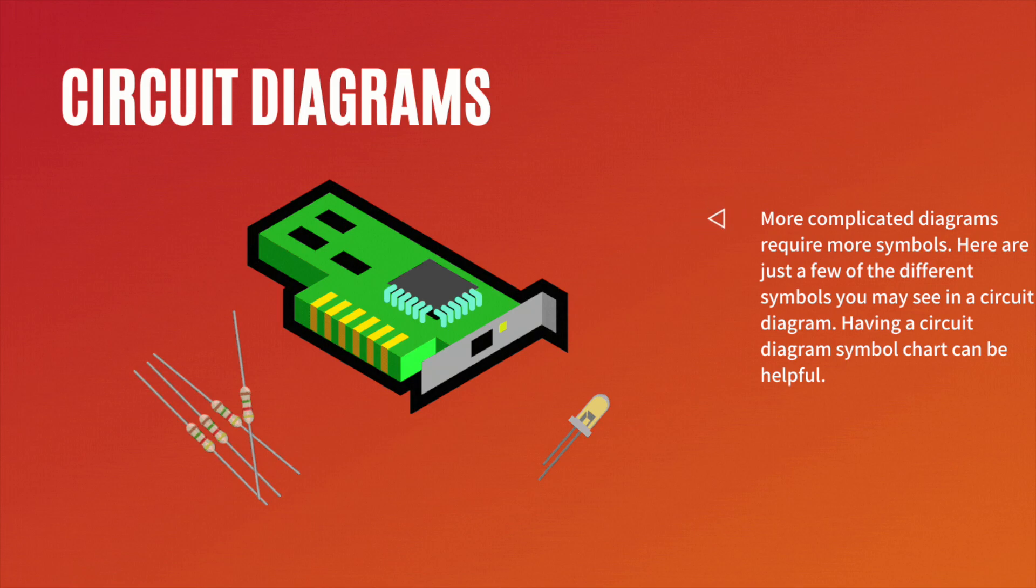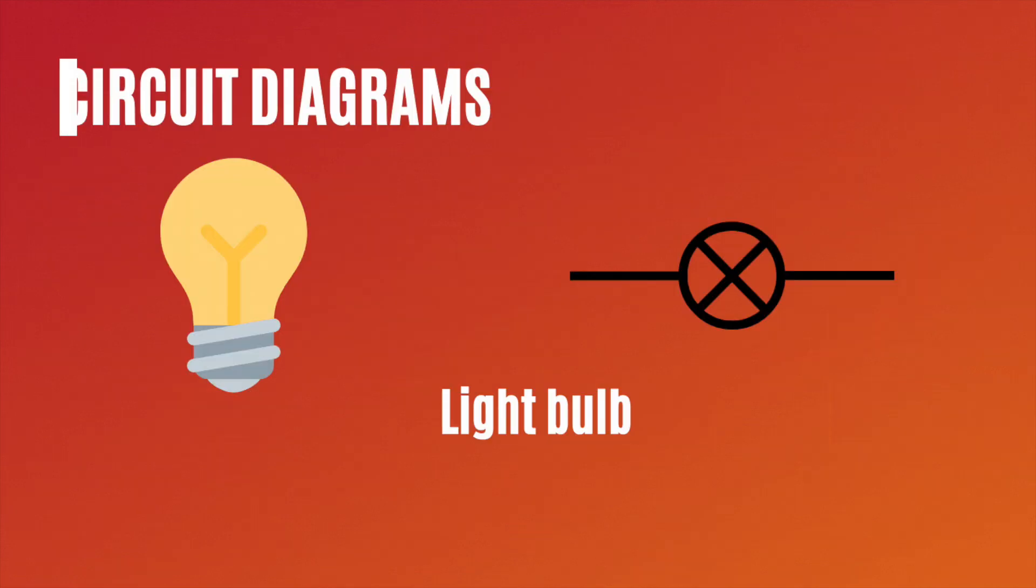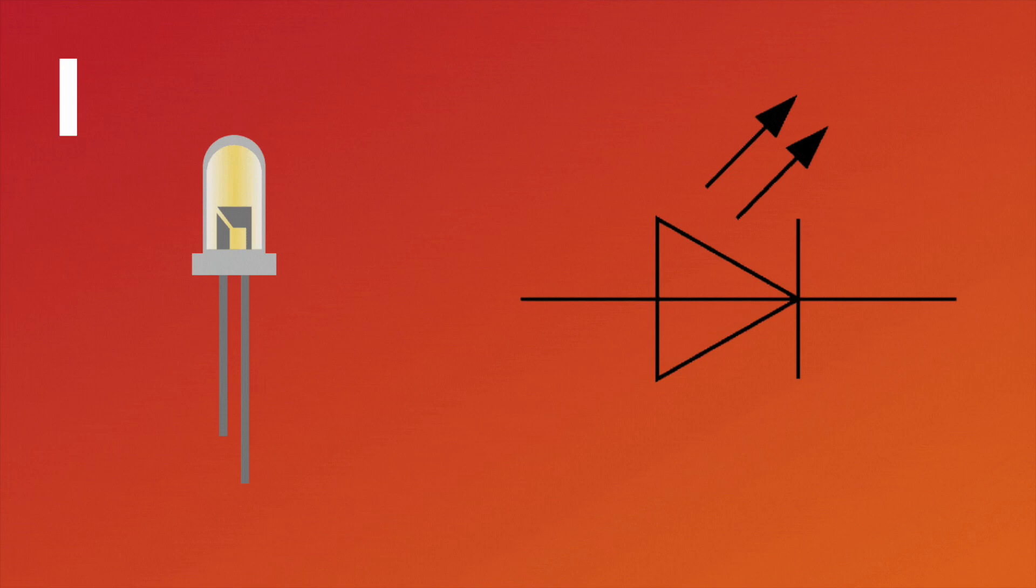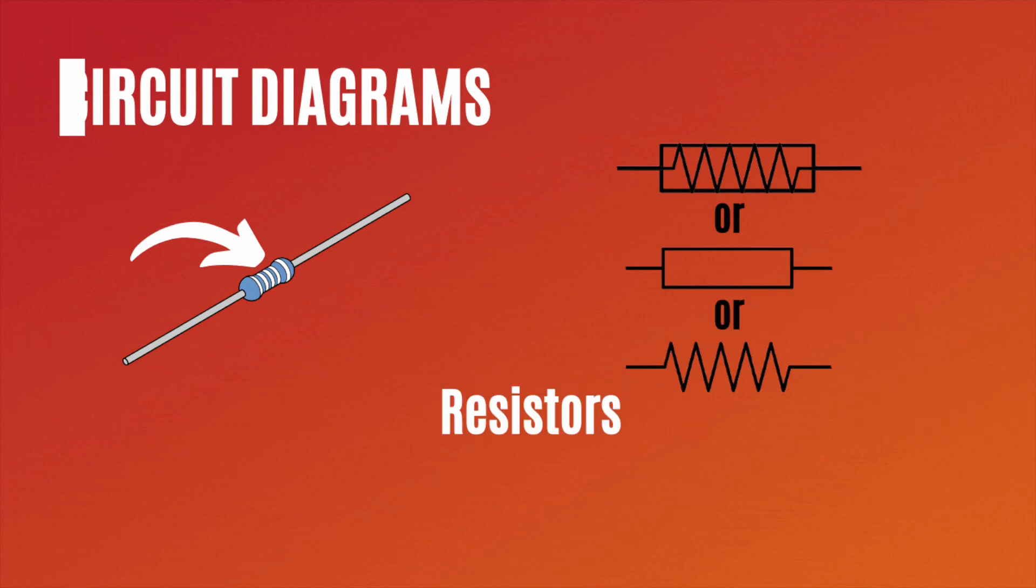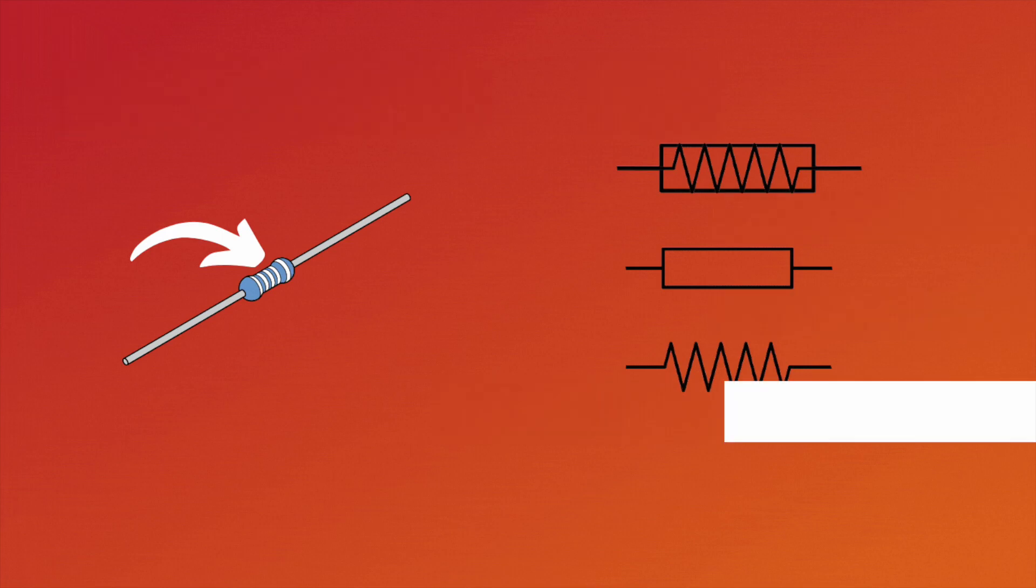More complicated diagrams require more symbols. Here are just a few of the different symbols you may see in a circuit diagram. Having a circuit diagram symbol chart can be helpful to read these. Light bulb, LED, resistors, motors.